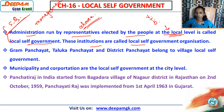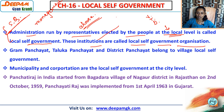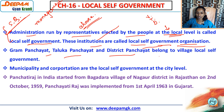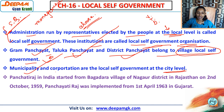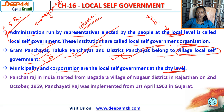These institutions - gram panchayat, taluka panchayat, and district panchayat - are called local self-government organisations. Don't get confused: gram panchayat, taluka panchayat, and district panchayat belong to village local self-government. As far as city level is concerned, we have two parts: municipality and corporation.